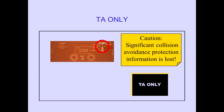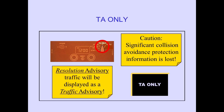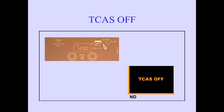In the TA position, resolution advisories are inhibited, and TA messages are displayed on the ND. In this mode, TCAS can only issue traffic advisories. Caution: significant collision avoidance protection information is lost, since resolution advisory traffic will be displayed as a traffic advisory. When TCAS modes are not selected on the transponder mode selector, TCAS is disabled, and the TCAS off message is displayed on the ND.